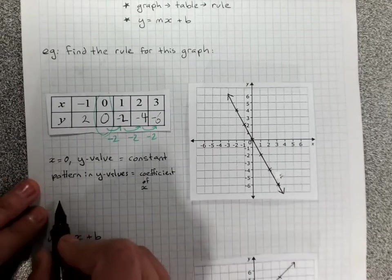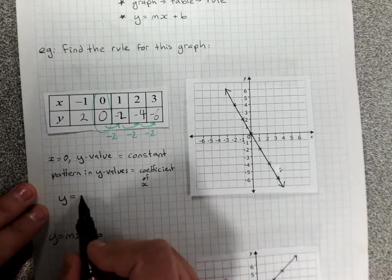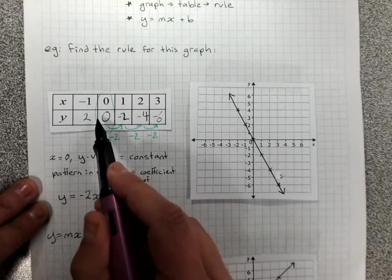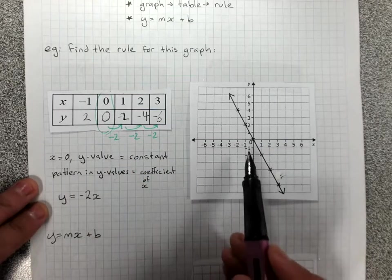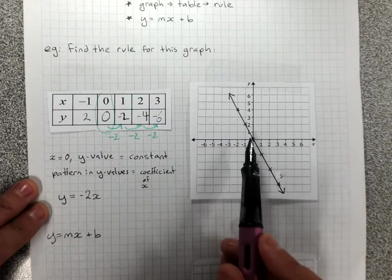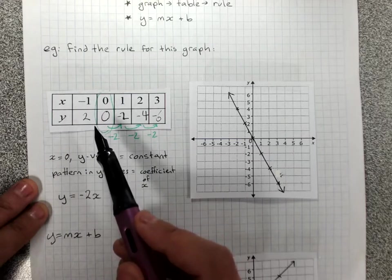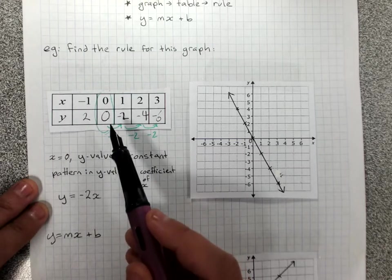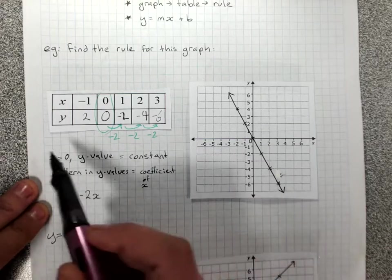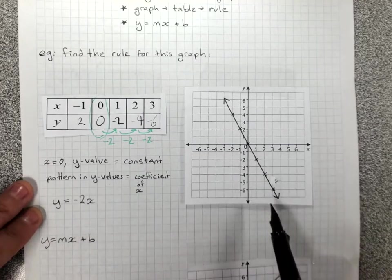So my rule here is y equals negative 2x plus 0 because that's the value that's here. And this is the graph of y equals negative 2x. We can check: negative 2 times negative 1 is 2, negative 2 times 0 is 0, negative 2 times 1 is negative 2. So that is one way of finding a rule when you have a graph.